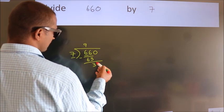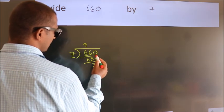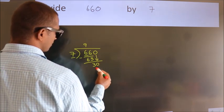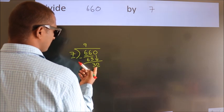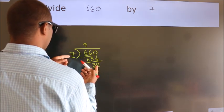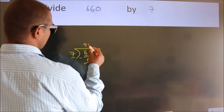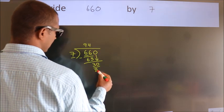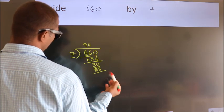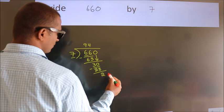After this, bring down the beside number. So, 0 down. So, 30. A number close to 30 in 7 table is 7 fours, 28. Now, we subtract. We get 2.